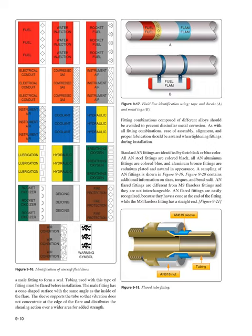AN flared fittings: a flared tube fitting consists of a sleeve and a nut. The nut fits over the sleeve and, when tightened, draws the sleeve and tubing flare tightly against a male fitting to form a seal. The male fitting has a cone-shaped surface with the same angle as the inside of the flare. The sleeve supports the tube so that vibration does not concentrate at the edge of the flare. Fitting combinations composed of different alloys should be avoided to prevent dissimilar metal corrosion. Standard AN fittings are identified by their black or blue color: all steel fittings are colored black, aluminum fittings are colored blue, and aluminum bronze fittings are cadmium-plated and natural in appearance. AN flared fittings are different from MS flareless fittings and they are not interchangeable.